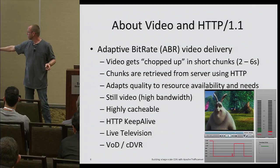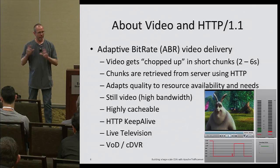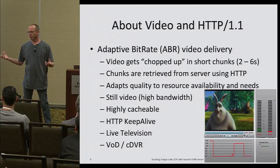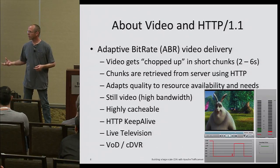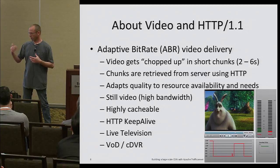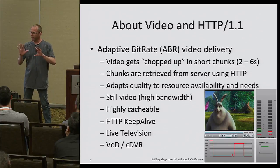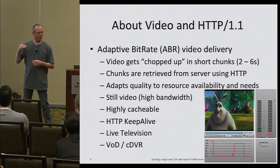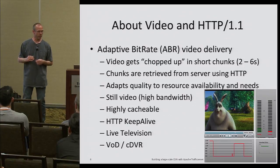We use this for live television, VOD, and cloud DVR. NBC was doing the Olympics — all of that used this type of technology. It also adapts to the resources you have in the network. If you use Netflix, when you start a movie it's fuzzy at first, then it ramps up to a higher bit rate. We call that ABR — adjustable bit rate video.